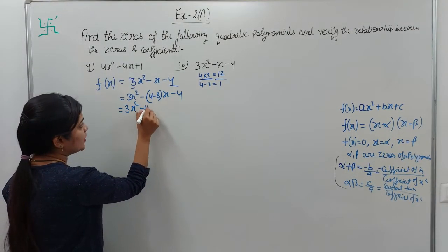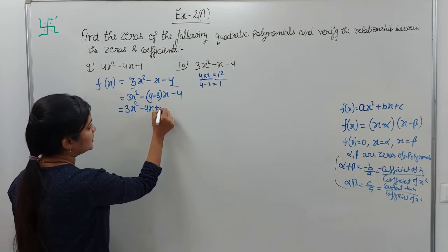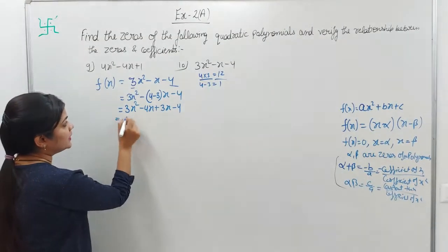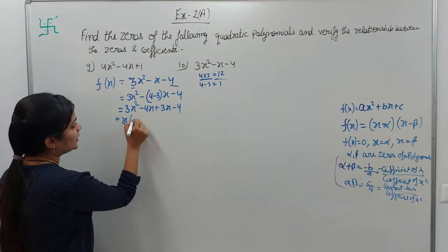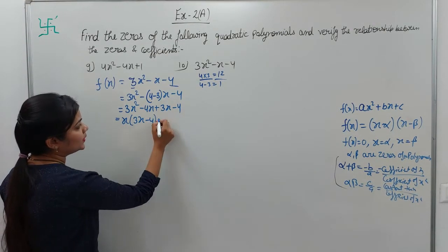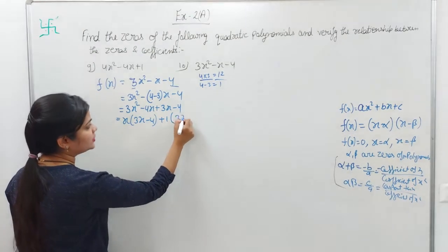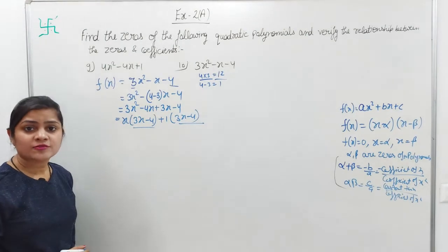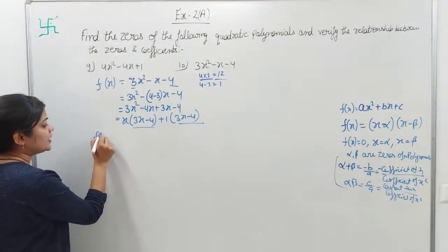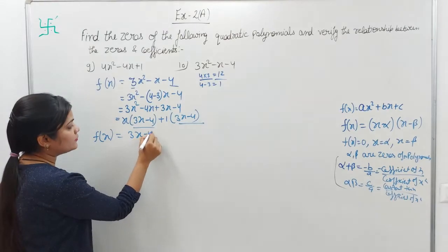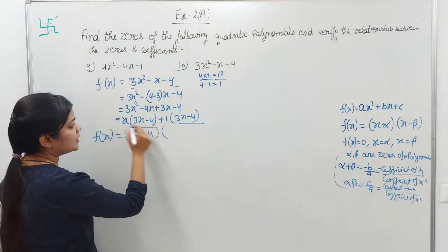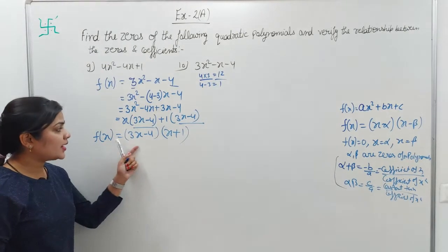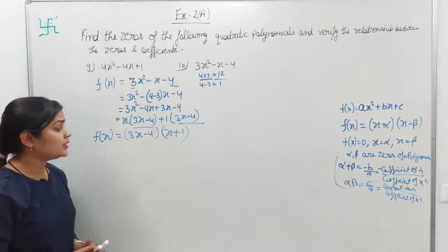Opening the bracket: 3x² - 4x + 3x - 4. From the first group, x is common: x(3x - 4). From the second group, 1 is common: 1(3x - 4). Both groups share the common factor (3x - 4), so f(x) = (3x - 4)(x + 1). So your factors are (3x - 4) and (x + 1).